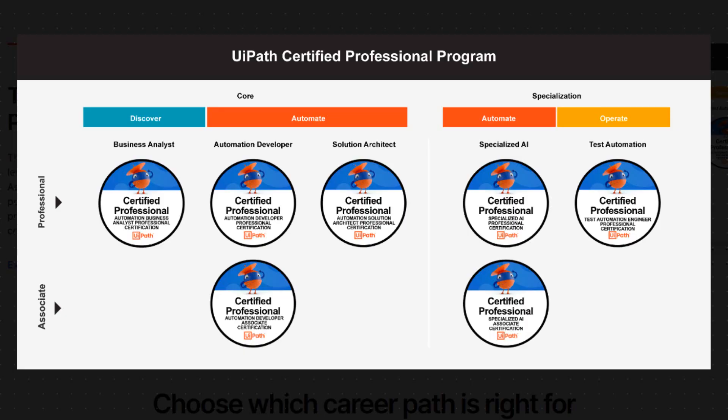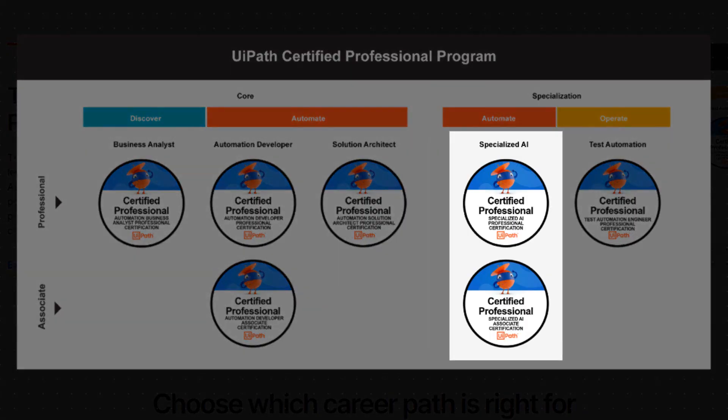In the AI track of certifications, UiPath now has two certifications: the Associate Certification and the Professional Certification. The Professional Certification was released at UiPath Forward in Las Vegas in the fall of 2023, and then now in the summer of 2024 they released the Associate Certification, which is easier — but not easy.